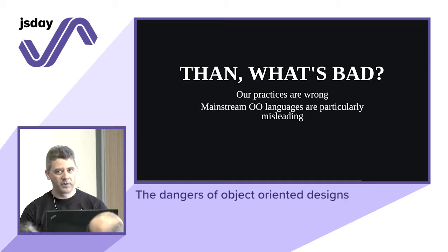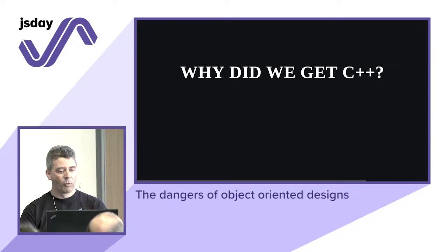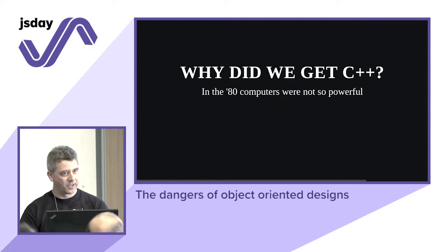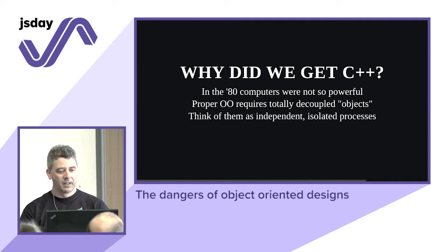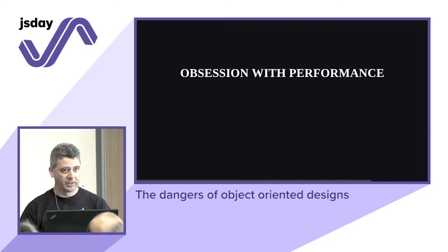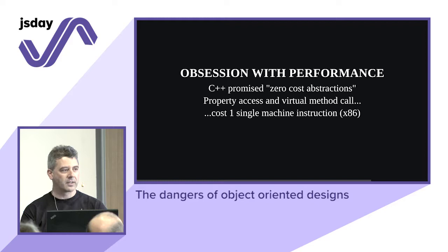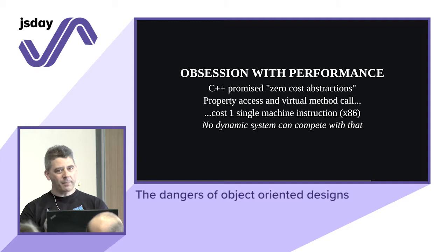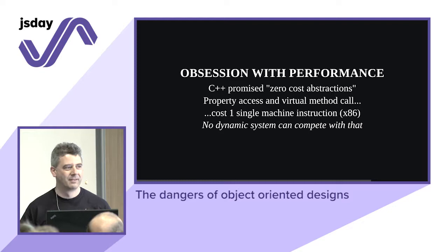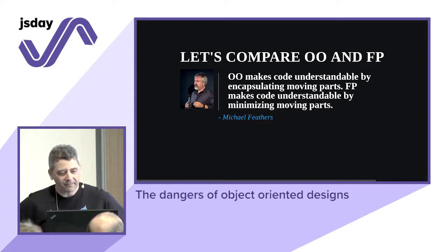What's bad is the practices, and our mainstream languages are misleading — they force us to have these dependencies. Why did we get C++? In the 80s, computers were not so powerful. Proper object-oriented requires decoupled objects and message passing, thinking of them as independent isolated processes. There was an obsession with performance — rightly so at the time. C++ promised zero-cost abstractions: property access and virtual method calls cost one single machine instruction on x86. We had C, we wanted OOP, we needed performance, and so we got C++.